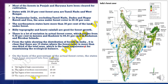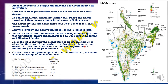On the basis of percentage of actual forest cover, states have been grouped into four regions: higher concentration, medium, low, and very low concentration. Higher concentration is more than 40% and very low concentration is less than 10%.